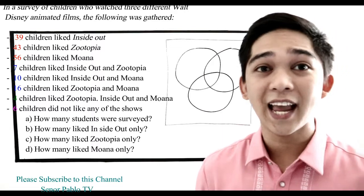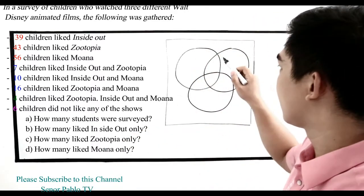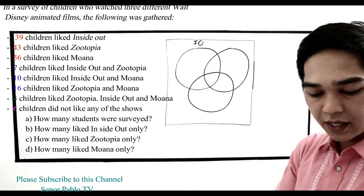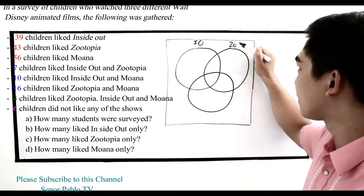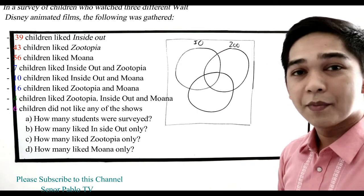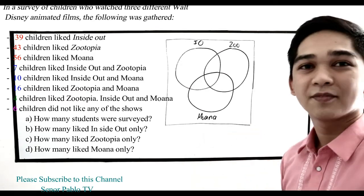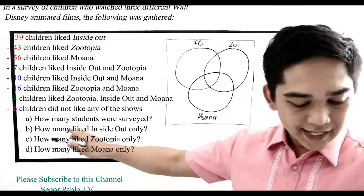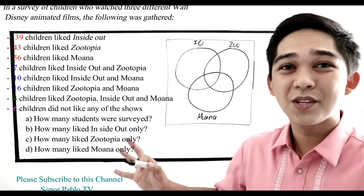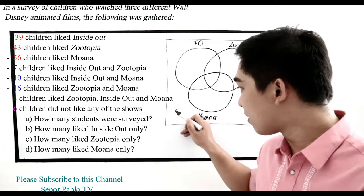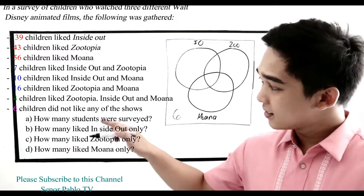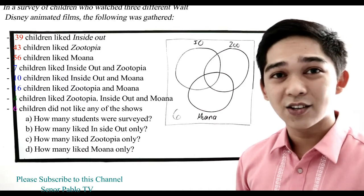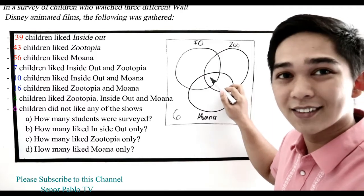So in that case, we have three categories. Our first circle is Inside Out, the second is Zootopia, and the third is Moana. Working backwards, we start at the bottom. 6 children did not like any of the shows, so we place 6 outside all circles. Next, 4 children like Inside Out, Zootopia, and Moana — they like all three — so we place 4 in the intersection of all three sets.